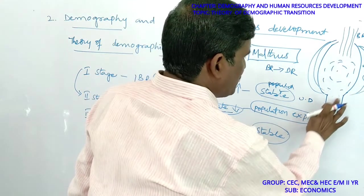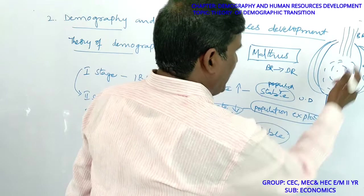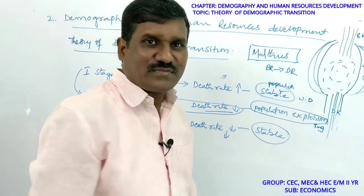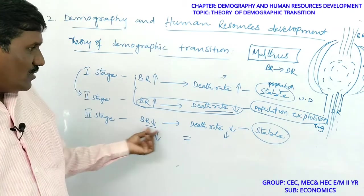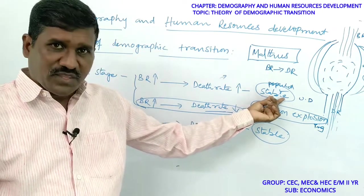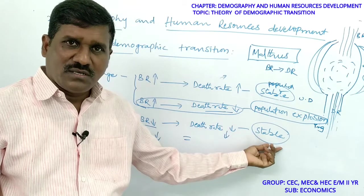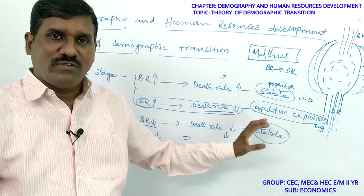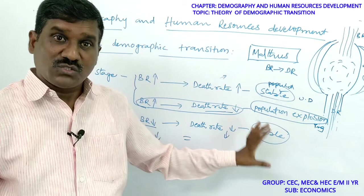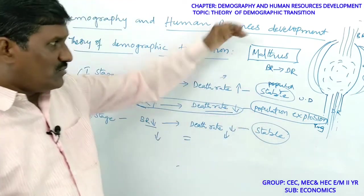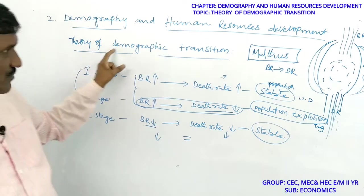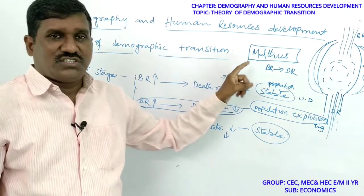There is no tension in the first stage and no problem in the third stage, but the second stage is a very dangerous stage. We are in the second stage. This is the explanation of the Theory of Demographic Transition by TR Malthus.